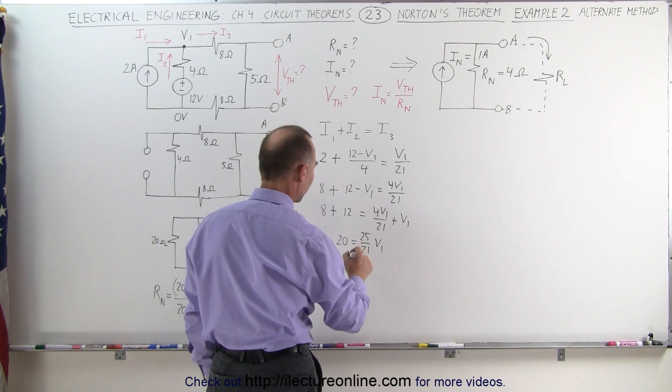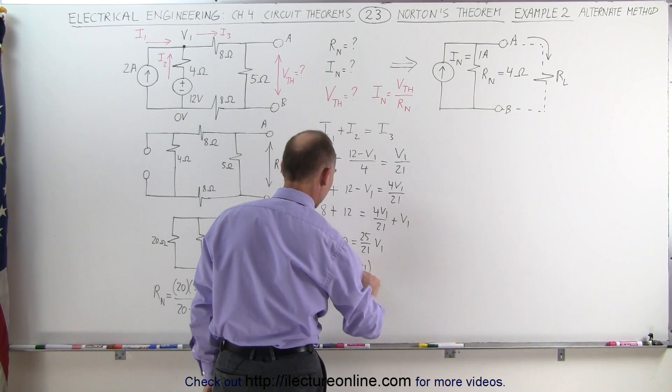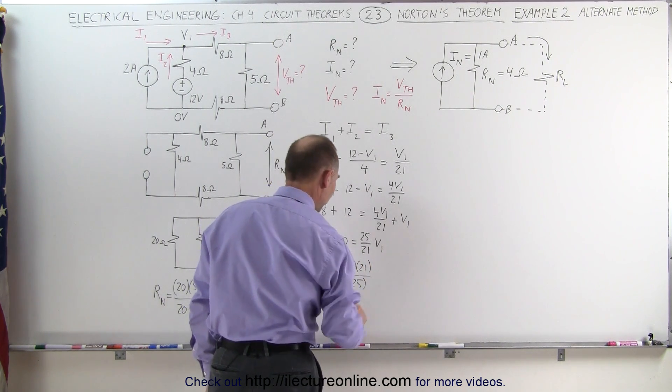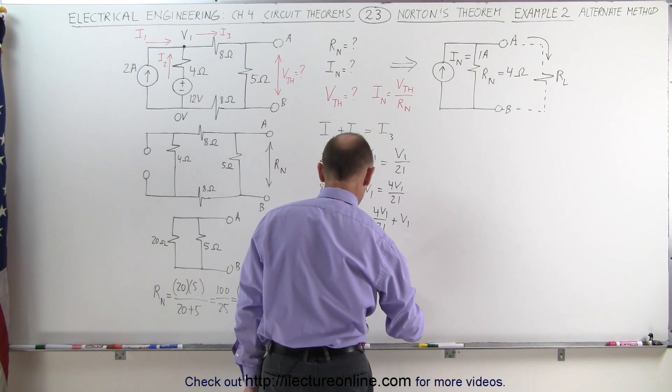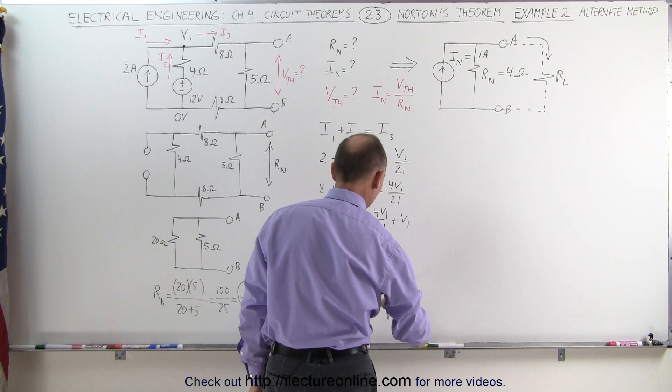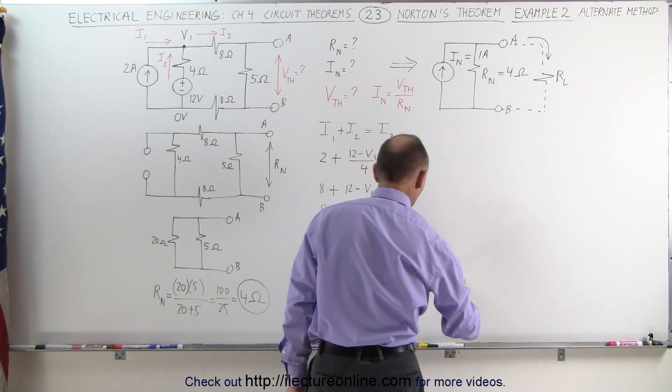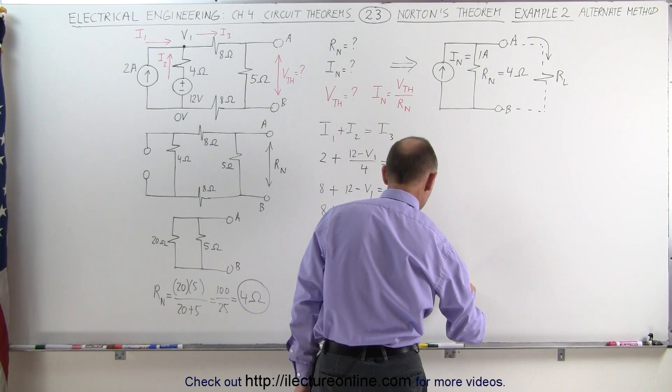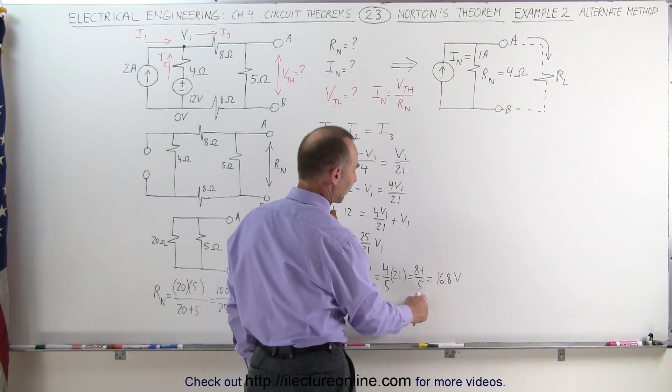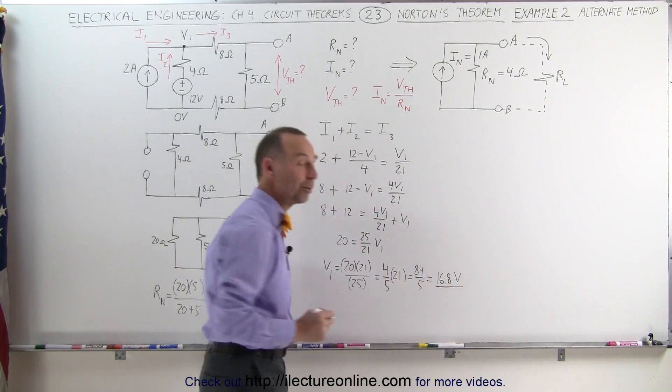And finally, if I want to find V1, I get V1 is equal to 20 times 21 divided by 25, which is 4 fifths times 21. This is equal to 4 over 5 times 21, and that would be 84 divided by 5, and that would be equal to 16.8 volts, if I'm not mistaken. 5 times 16 is 80, 5 times 0.8 is 4, and that looks right. So V1 is equal to 16.8 volts.